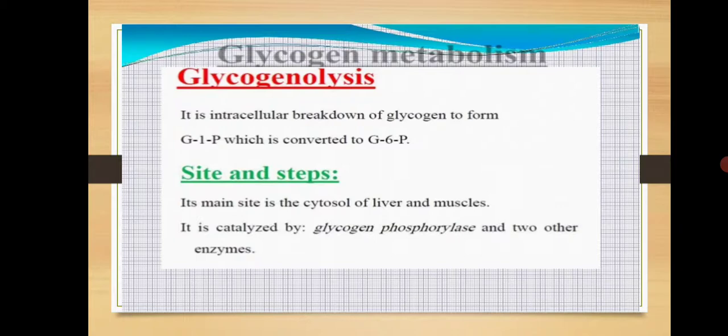Glycogenolysis is an intracellular breakdown of glycogen to form glucose-1-phosphate, which is then converted into glucose-6-phosphate. We break down glycogen, which is the stored food material in animals, whereas starch is the stored food material in plants.